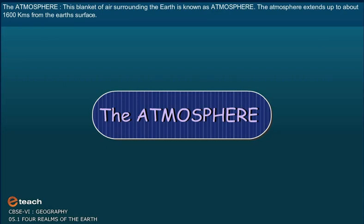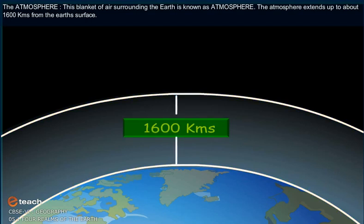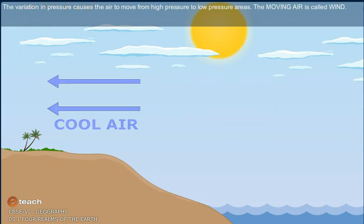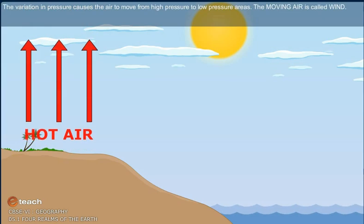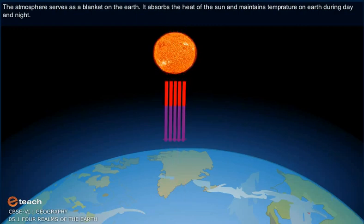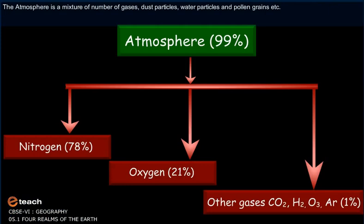This blanket of air surrounding the Earth is known as the Atmosphere. The atmosphere extends up to about 1,600 kilometres from the Earth's surface. The variation in pressure causes the air to move from high pressure to low pressure areas. The moving air is called wind. The atmosphere serves as a blanket on the Earth. It absorbs the heat of the Sun and maintains temperature on Earth during day and night. The atmosphere is a mixture of a number of gases, dust particles, water particles, and pollen grains, etc.